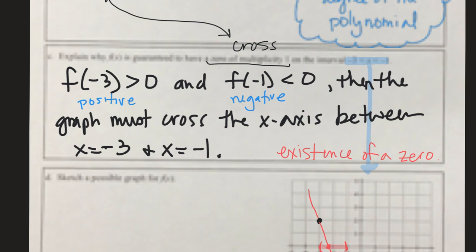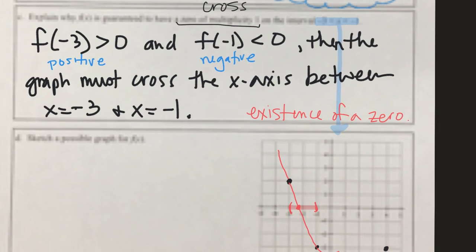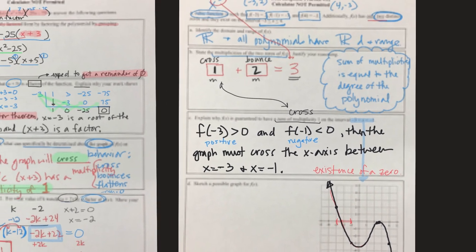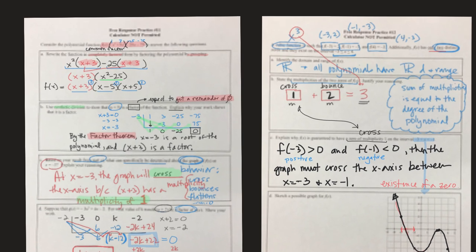The last part is the sketch. We know it has to cross between negative 3 and negative 1. It can't cross again but must have another zero, so the graph has to bounce — it comes up, touches the x-axis, then goes back down. It doesn't matter exactly where; it says sketch a possible graph. We just know it touches somewhere on the positive side of x. There are other possibilities — it's not an exact science. That covers these FRQs dealing with polynomials.